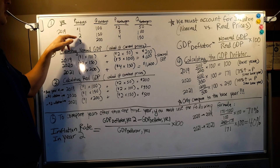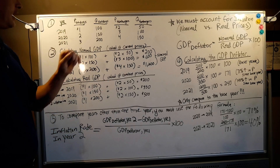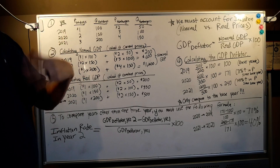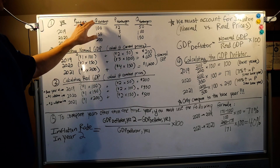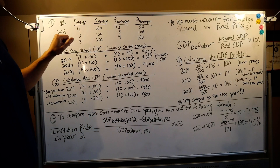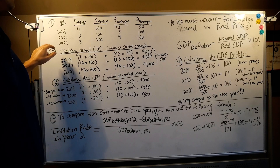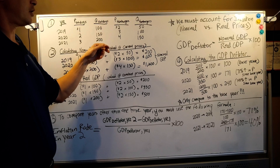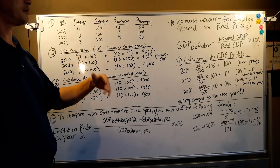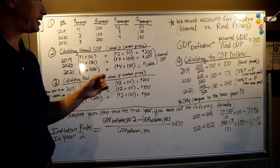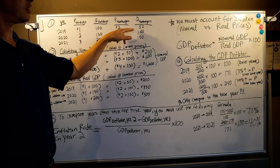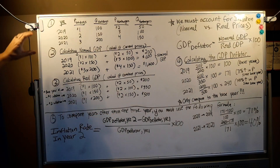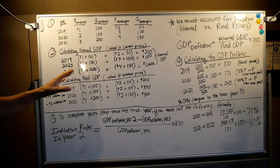We have three years: 2019, 2020, and 2021. We have price of hot dogs, quantity of hot dogs, price of hamburgers, and quantity of hamburgers. The price of hot dogs goes from one dollar to two dollars to three dollars. The quantity of hot dogs grows from 100 in 2019 to 150 in 2020 to 200 in 2021 — it's a growing economy. The price of hamburgers goes from two dollars to three dollars to four dollars, so we have some inflation.